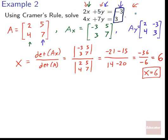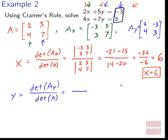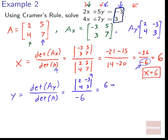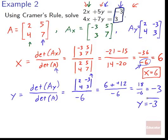For y: we already know the determinant of A is −6, so we just reuse it. The determinant of Ay is 2·3 − 4·(−3) = 6 + 12 = 18. So y = 18 / −6 = −3. Again, y = −3 matches our previous example. If you're doing this for the first time, I'd recommend checking your work since there's a lot of arithmetic involved.